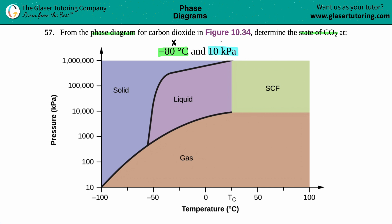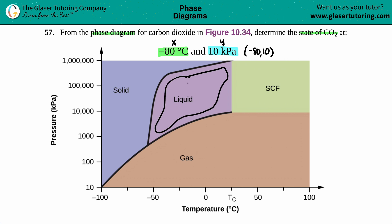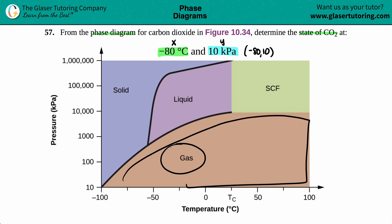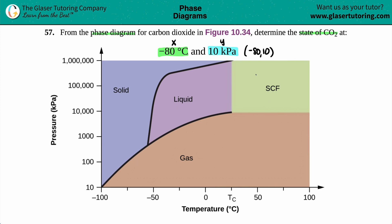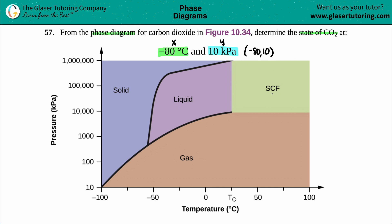So we just have to find the point (-80, 10). This phase diagram represents the different phases in which carbon dioxide can exist. The dark purple region is solid CO₂, the lavender/light purple is liquid CO₂, and the rest — the bulk of the graph — is CO₂ gas. At standard temperature and pressure, the green area is called SCF, supercritical fluid.